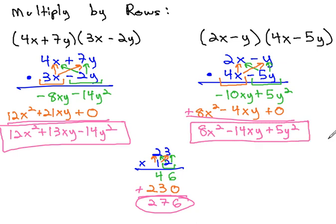Multiplying by rows works exactly like multiplying in arithmetic. Multiply each digit or term by each of the digits or terms above it. As you move over, include a 0 for your placeholder.